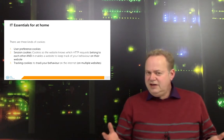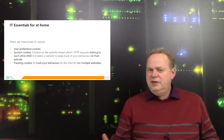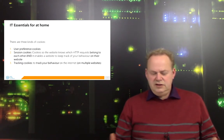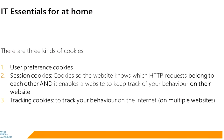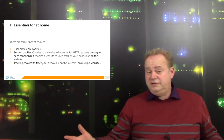We have three different kinds of cookies. The first one is a user preference cookie. The second one is a cookie to see which HTTP requests belong to each other. And the third one is a tracking cookie — a cookie where we can track your behavior on the internet and which websites you visited before.